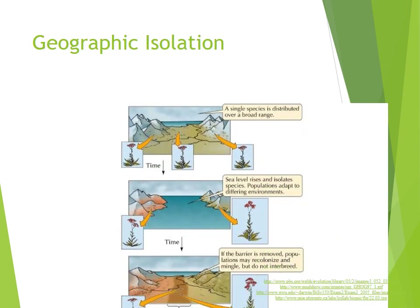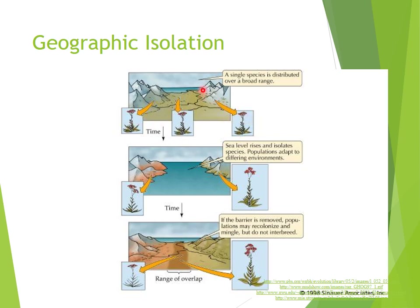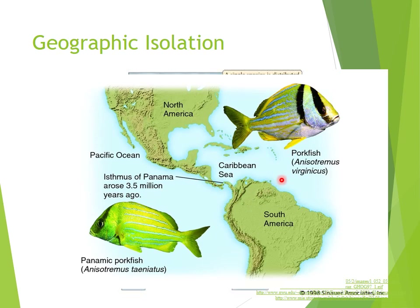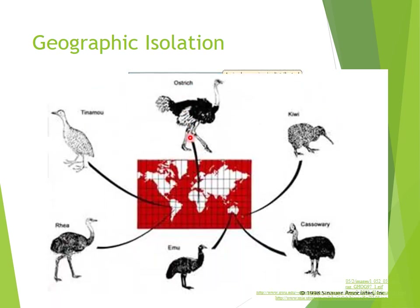This doesn't only happen with animals — it can happen with plants. If plate tectonics pulls a continent apart and an ocean comes across, plants 100 miles apart can't normally breed. Natural selection favors different conditions on each side, and they evolve into two species. This also happened with two types of pork fish on either side of the Isthmus of Panama. That area used to be under the ocean. When the Isthmus of Panama rose out of the water, it separated the ancestral population into two, and over time natural selection favored two different sets of traits.